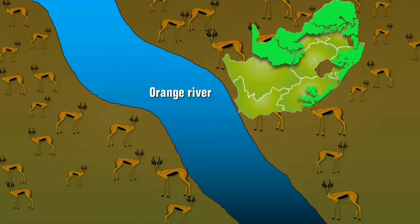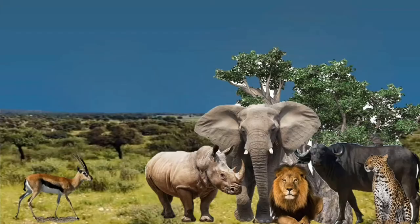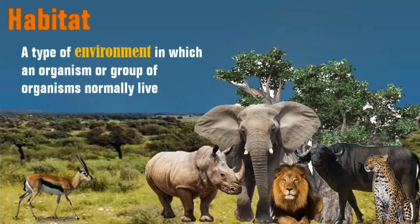Antidorcas marsupialis hofmeyri is the common subspecies found in this area. In the savannah habitat, the vegetation is predominantly grasses and trees. The Springbok feeds on grasses and has the ability to meet all of their water needs from the food they eat, such as flowers, seeds, and leaves of shrubs — preferably before dawn when the food items are at their most succulent.